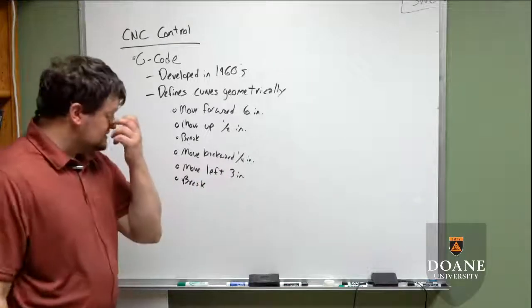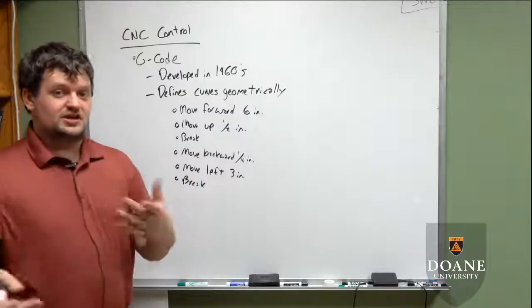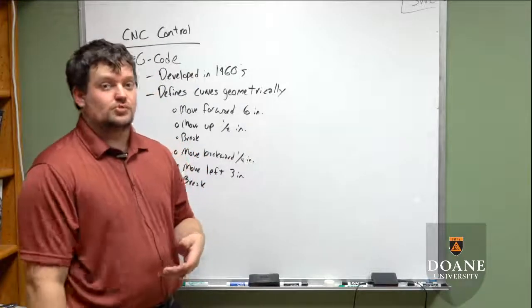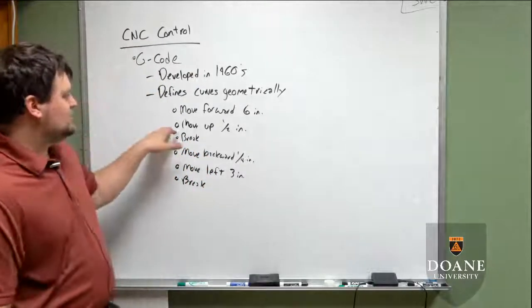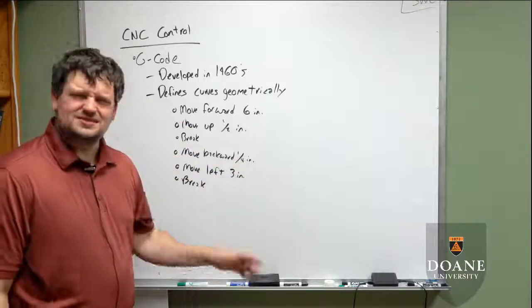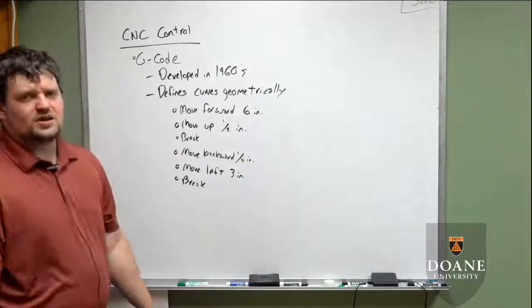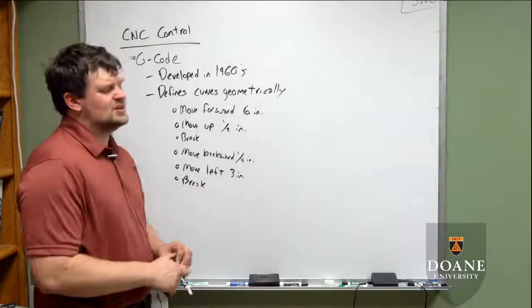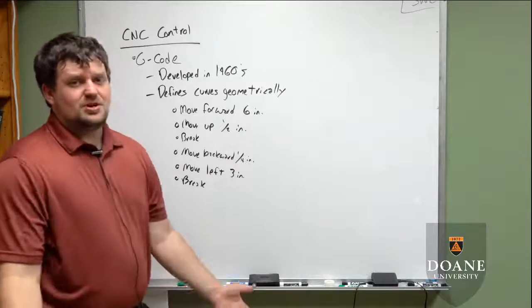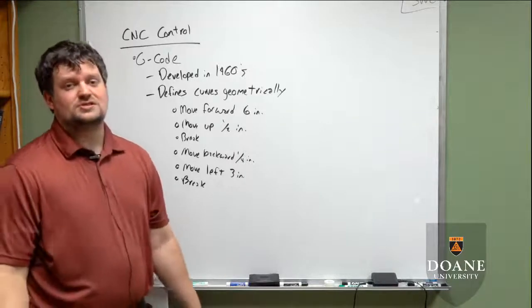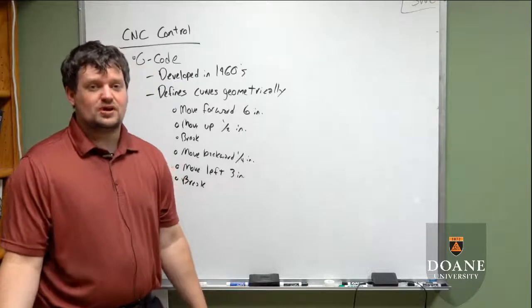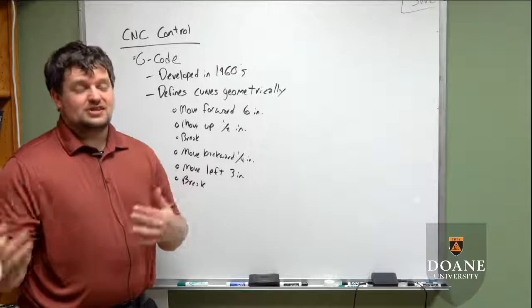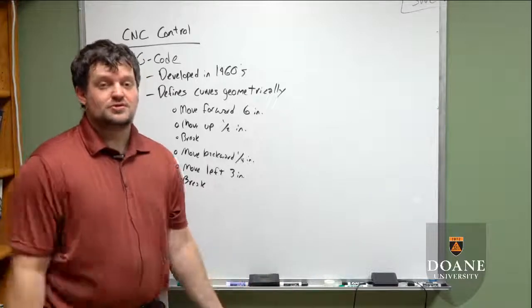And all this is, is it's creating a geometric representation of what each motor has to experience in order for that motor to operate. Now, the processor inside of the CNC machine will take this code, turn it into values of on and off, and send those values of on and off to the appropriate motor. And you can specify speeds in this more than just distance. You can specify times. There are a number of ways to execute a G-code. But it is a very old structure. It came out in the 1960s.